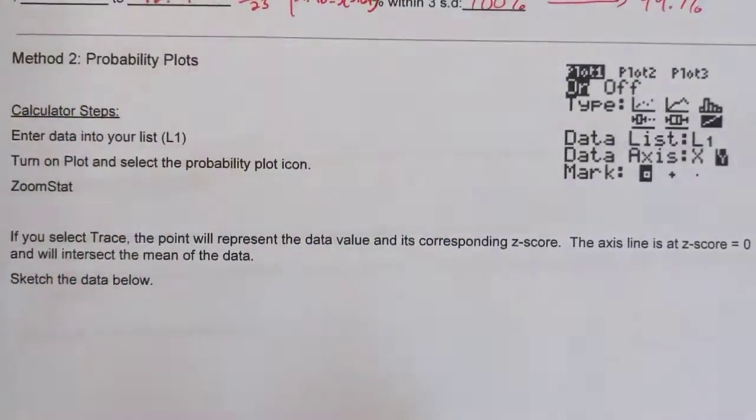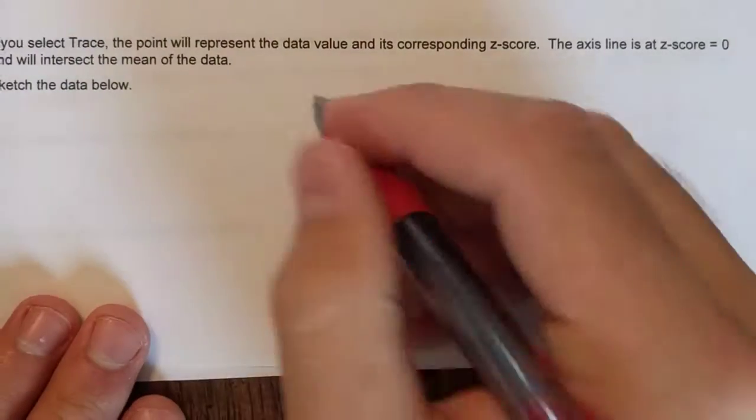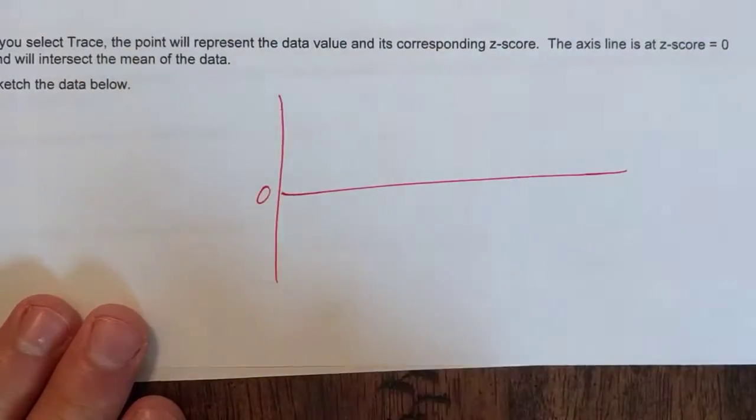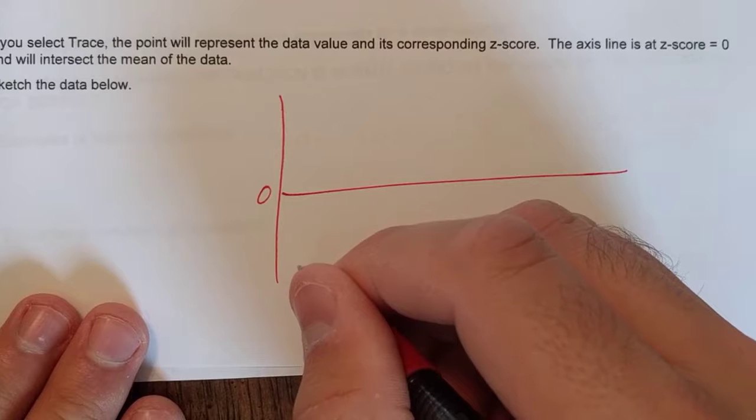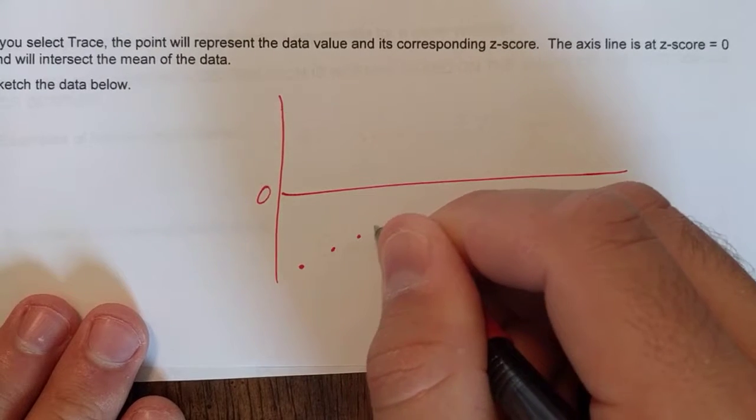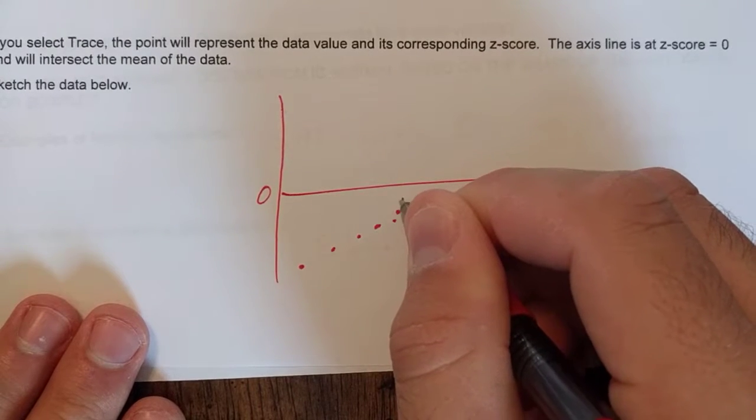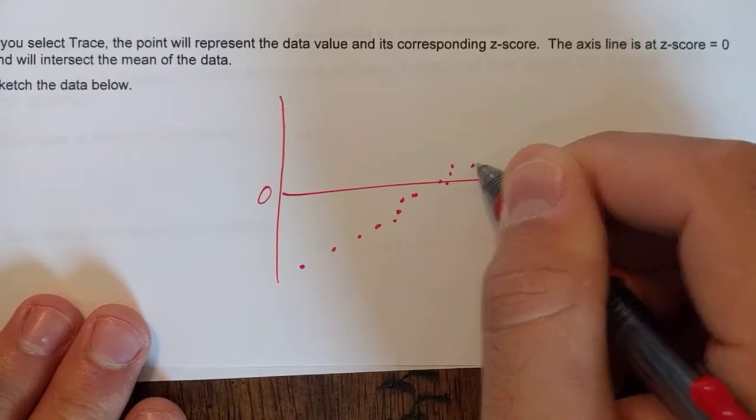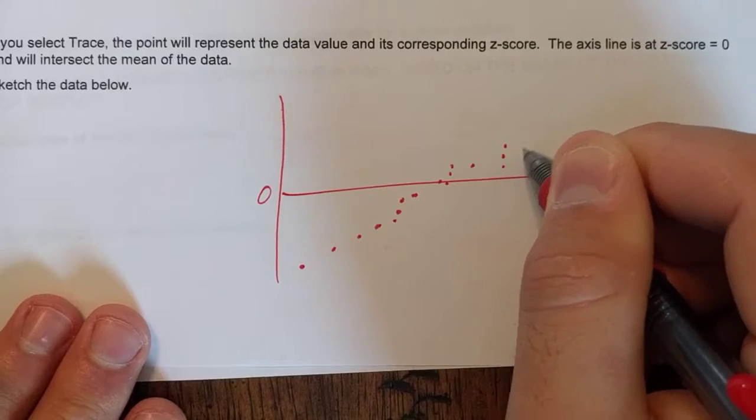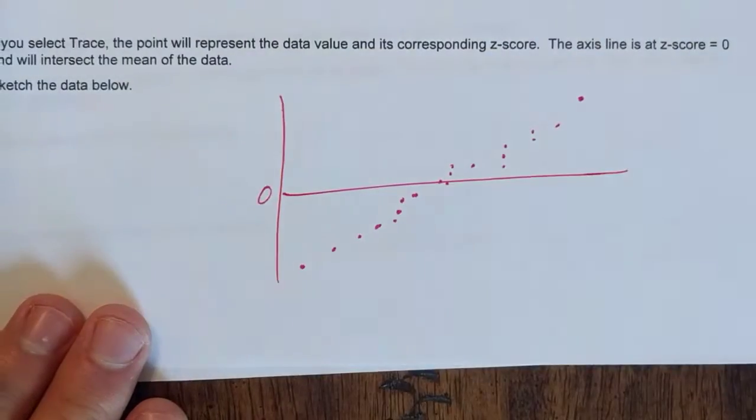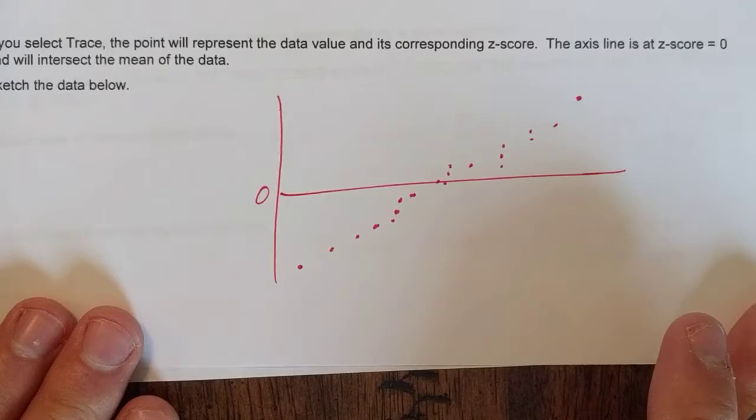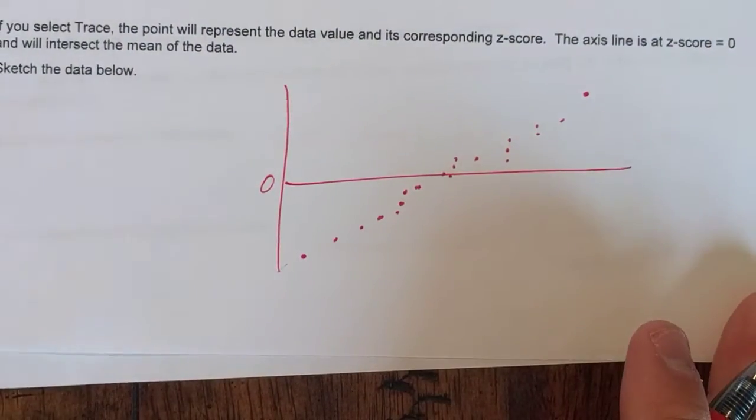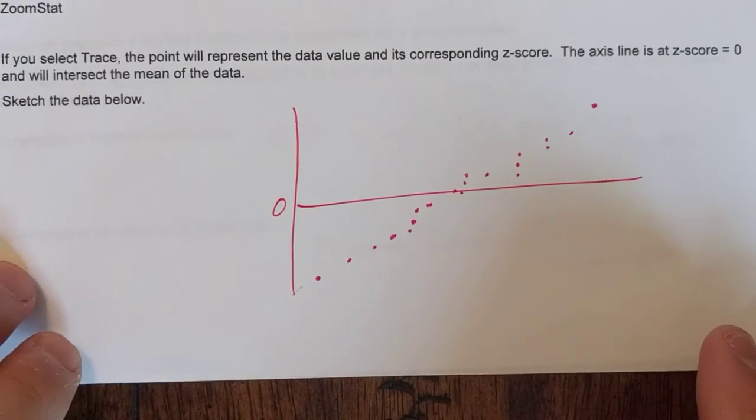So if I asked you to sketch it. This is your zero z-score. Just try your best to sketch what it looks like. Even the points that are pretty much stacked. And do your best to make it look like how it appears on your calculator. And you see it. And therefore you know that it's approximately normal.